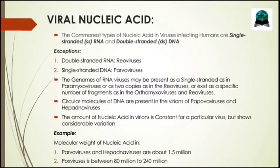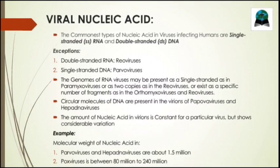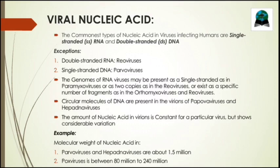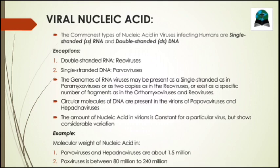The nucleic acids that most commonly affect humans are single-stranded RNA and double-stranded DNA. Exceptions include single-stranded RNA viruses such as reovirus and double-stranded DNA viruses such as parvoviruses. The nucleic acid can exist as a single segment or as several segments. Most viruses possess linear genomes, except papova virus, which contains a super-coiled circular genome.